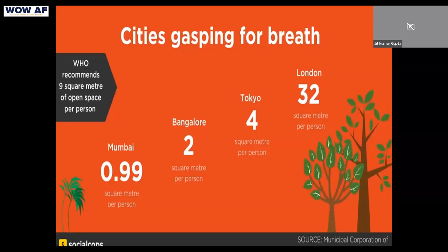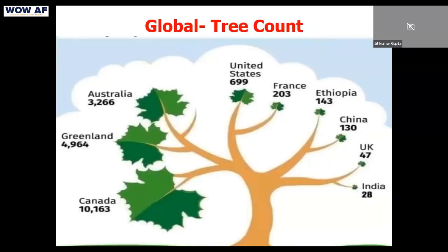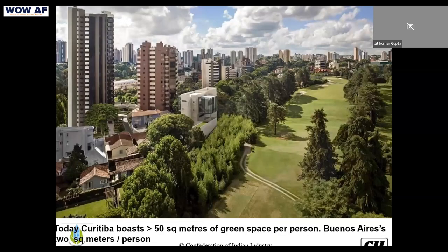Bombay has only one square meter of green space per person against the nine square meter standard. Bangalore has only two square meters against nine. We have only 28 trees available per person, as against the world average of 422 trees. Canada has 10,163 trees per person — you can see what the situation is.